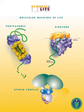Bioengineering overlaps substantially with biotechnology and the biomedical sciences in a way analogous to how various other forms of engineering and technology relate to various other sciences — for example, aerospace engineering and other space technology to kinetics and astrophysics. In general, biological engineers or biomedical engineers attempt to either mimic biological systems to create products or modify and control biological systems so that they can replace, augment, sustain, or predict chemical and mechanical processes.